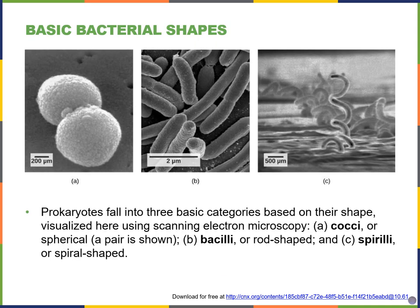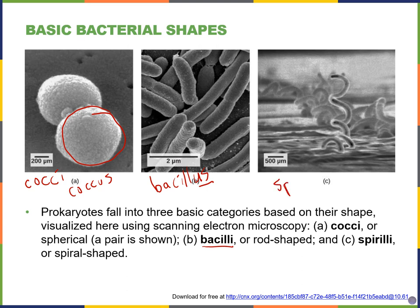Most bacteria come in one of three basic shapes. The first are cocci (singular: coccus) — these are spherical cells. The second are bacilli (singular: bacillus) — these are rod-shaped cells that look like hot dogs. And then we have spirilla (singular: spirillum) — these are spiral-shaped, though sometimes they simply look wavy.